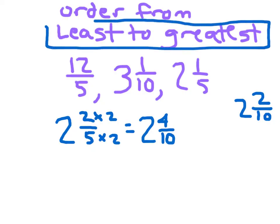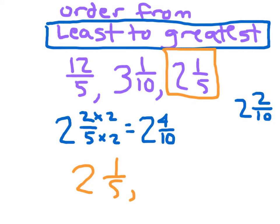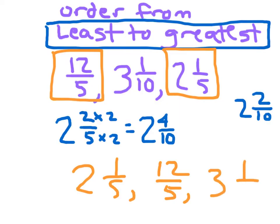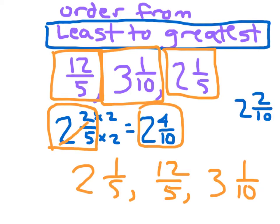Going from least to greatest — don't make the common mistake of ordering in the wrong direction. The whole numbers are 2, 3, and 2. Comparing the 2s: 4 tenths is bigger than 2 tenths, so 2 and 2 tenths is the smallest. When writing out the list, we must give them back the same way they were originally given. So we write 2 and 1 fifth first, then 12 fifths — which was our 2 and 4 tenths equivalent. Be careful not to write the converted values in your final list.